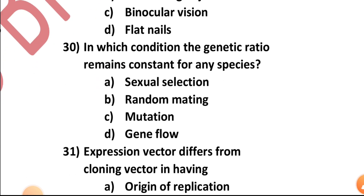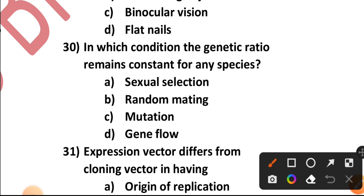Question number thirty: In which condition does the genetic ratio remain constant for any species — sexual selection, random mating, mutation, or gene flow? The genetic ratio remains constant irrespective of the species in case of random mating. Option B.